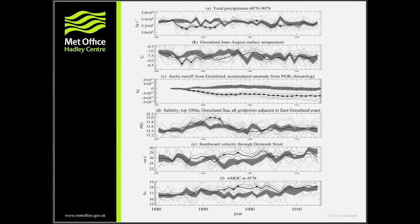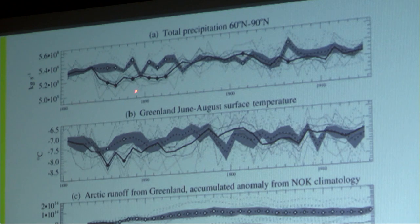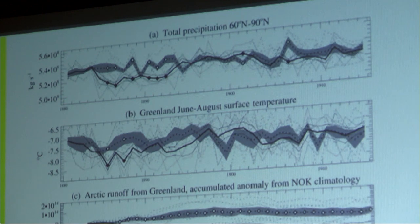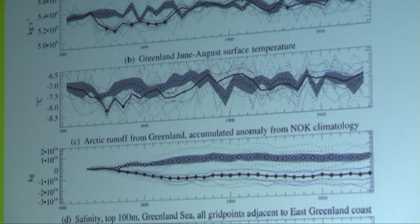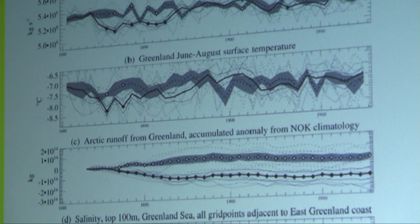Where do these salinity anomalies come from? We think it's to do with a slowdown in the hydrological cycle. This is total precipitation from 60N to 90N — everywhere in the Arctic. Looking at maps, you can't really see one particular location with less precipitation; it seems to be a general reduction in Arctic precipitation. This happens within about two years of the eruption and goes on for quite a long time. There's another mechanism too: Greenland has a few cold summers, meaning less melting and less runoff from precipitation in summer as well.